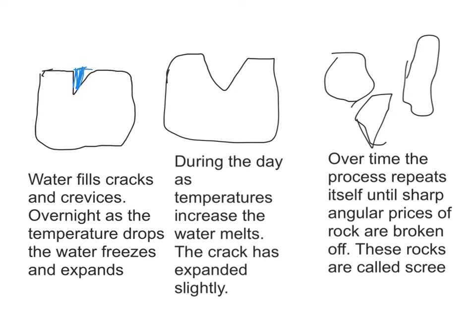This simple diagram explains what is going on with frost-shattering. We can see that the water fills the cracks and crevices overnight, the temperature drops and it freezes. As the temperature increases, the water melts but the cracks are slightly wider, and over time, eventually these sharp angular pieces of rock break off.